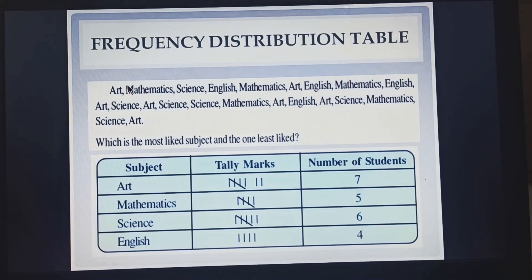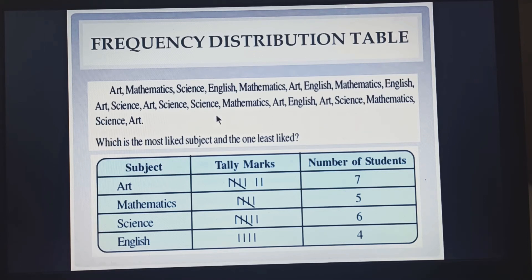Here we are having the data of the favorite subject of a group of students. You can see here we are having subjects like arts, maths, science, english and so on. To form the distribution table, we have to make three columns. The first column will contain the subject. Here the information is about subjects, so we will write the heading as subject.